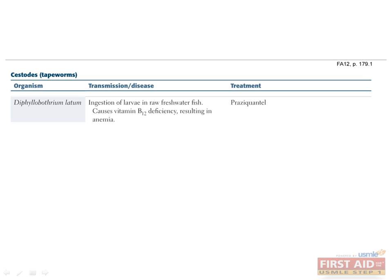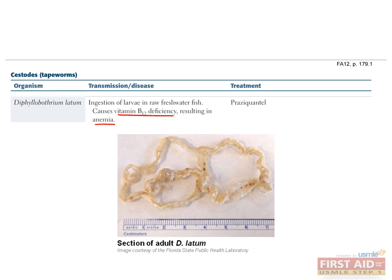The next cestode is Diphyllobothrium latum, which is ingested in undercooked or pickled freshwater fish. You will encounter this worm on boards in the context of vitamin B12 deficiency and macrocytic anemia. This long worm, which can grow to be several meters long, attaches to the intestinal wall and competes with the host for nutrients, especially vitamin B12. As a result, the host becomes vitamin B12 deficient and presents with megaloblastic macrocytic anemia.